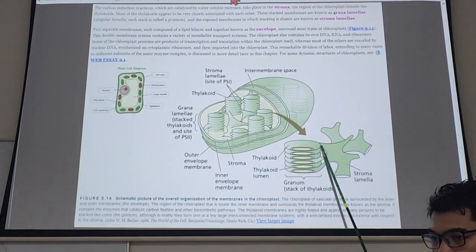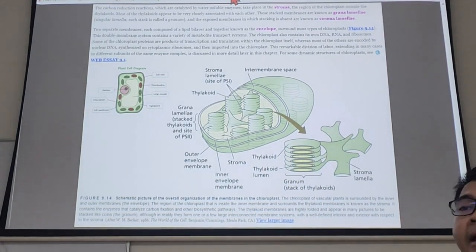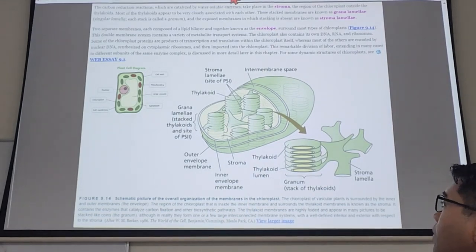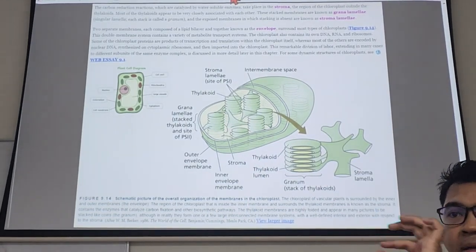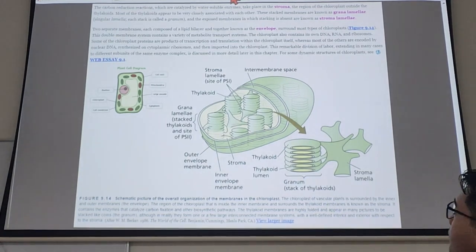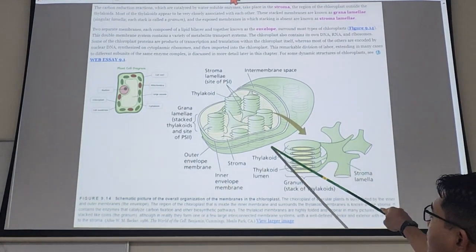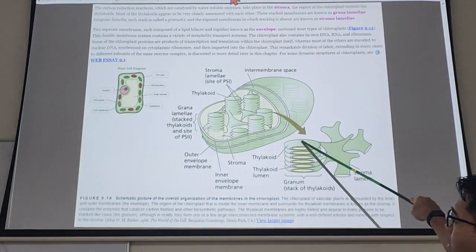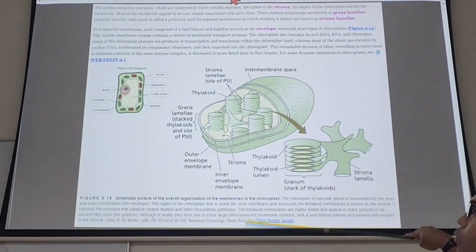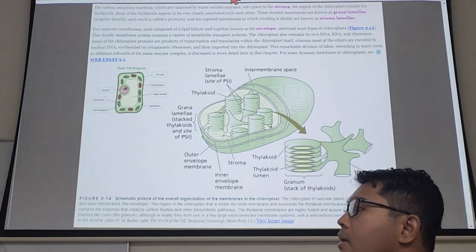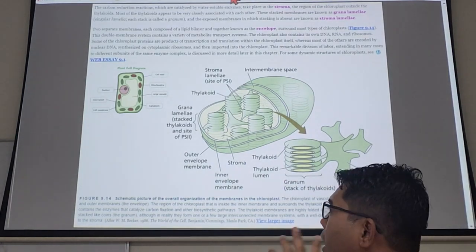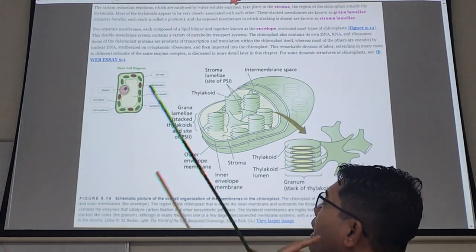One pancake is called a thylakoid disk. It's not written there but it's called this. It's actually a disk of granum.